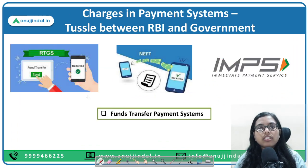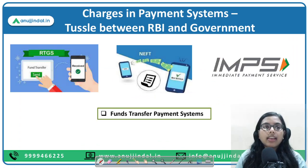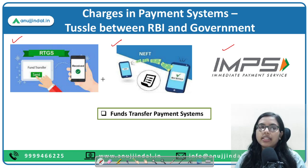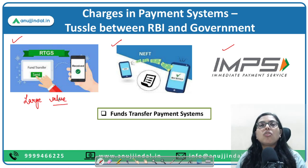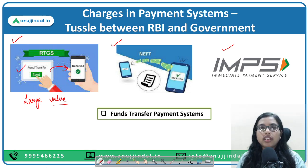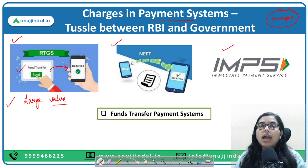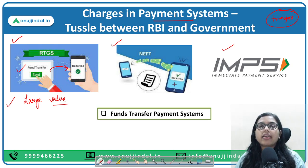In the funds transfer payment system, we have RTGS, NEFT, and IMPS. RTGS stands for Real Time Gross Settlement — large value transactions are settled on a real-time basis. NEFT is also a funds transfer system where large sums can be transferred, but the confirmation takes a certain amount of time; it is not immediate.